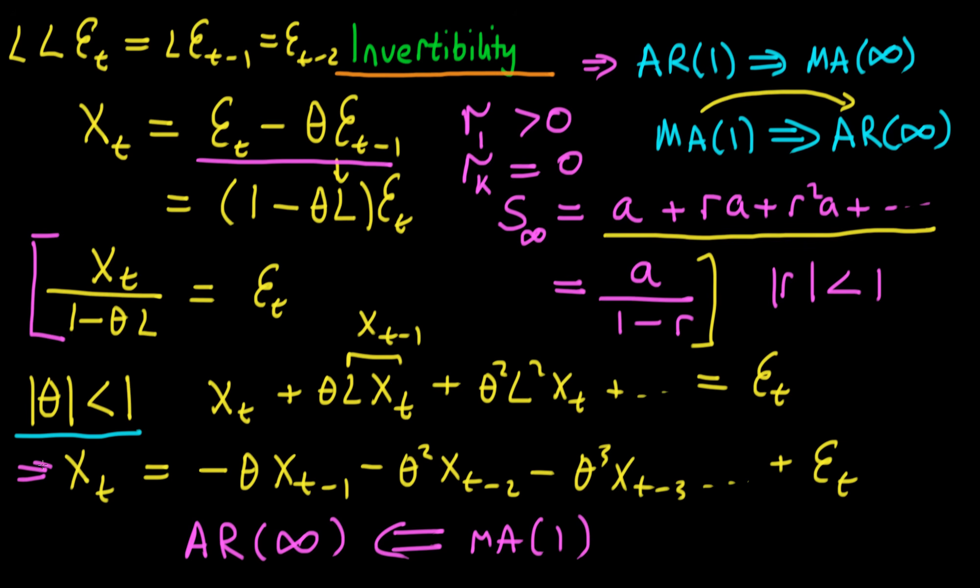And when we write the process as an infinite AR process on first glances it appears that how can that be the case because we see that we've got XT on the left hand side and we've got XT minus 2 on the right hand side.